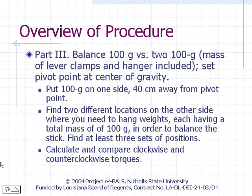Part 3 of this experiment is similar to Part 2, except that you will split the 200 gram weight into two 100 gram weights. Find two different locations for the two 100 gram weights in order to balance a 100 gram weight located 40 centimeters from the pivot point on the other side of the stick. There should be more than one way of achieving this balance — find at least three ways of doing it.